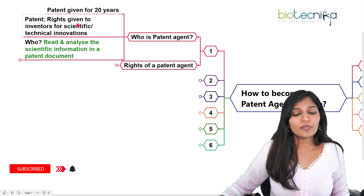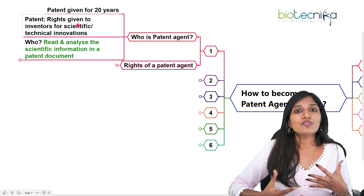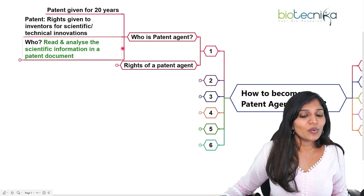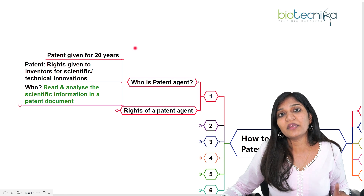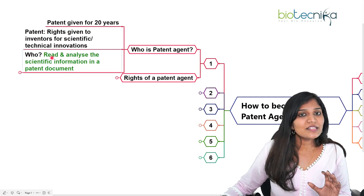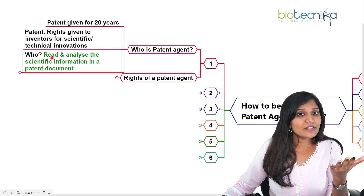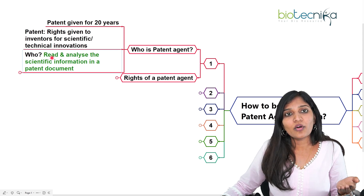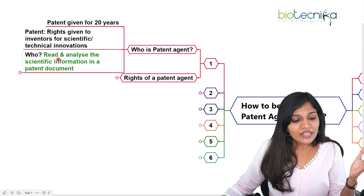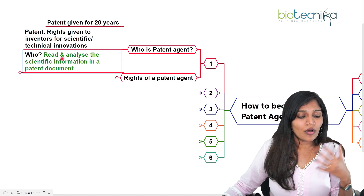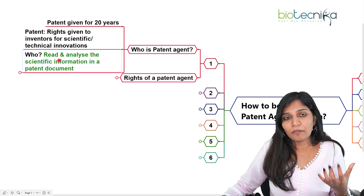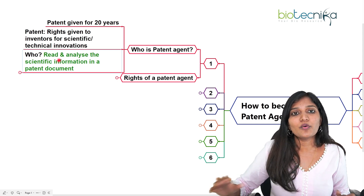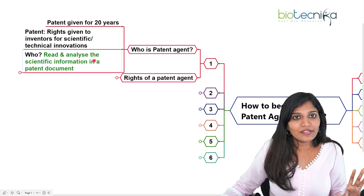Just as we have copyright when making any sort of content, a patent is similar to that. Now, who is this patent agent? The patent agent is the one who actually receives the patent application form submitted by the discoverer or inventor and reads all the protocols or scientific information.